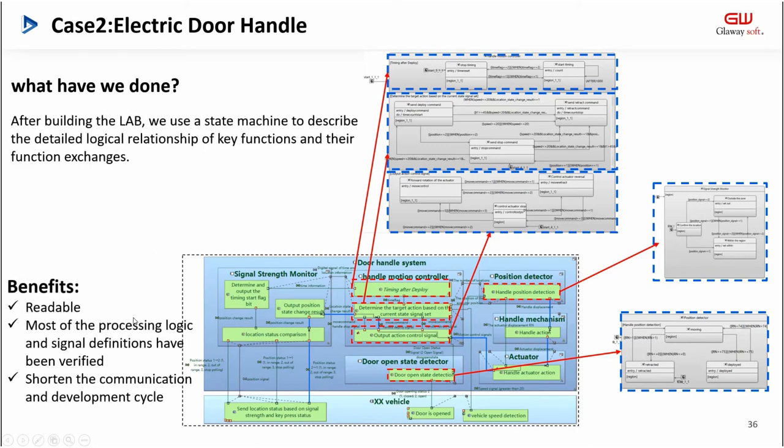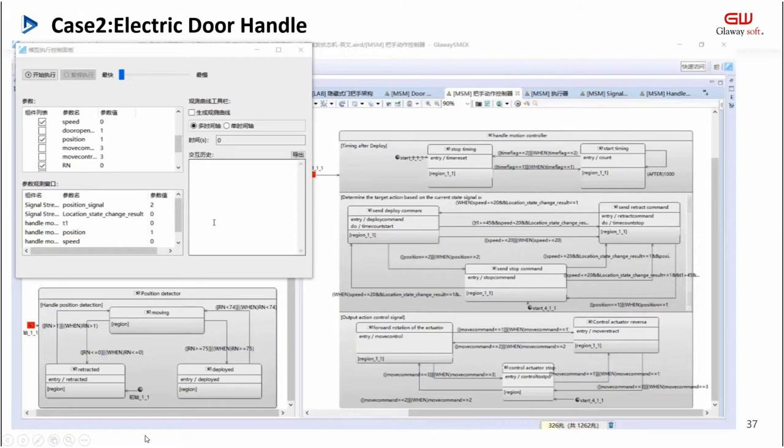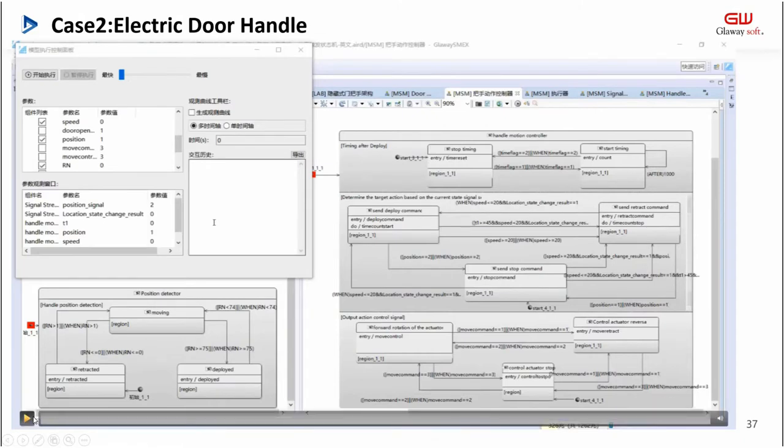After building the LAB, we use the state machine to describe the detailed logical relationship of key functions and their function exchanges. The benefits are: it's more readable, most of the processing logic and signal definitions have been verified, and it shortens the communication and development cycle.